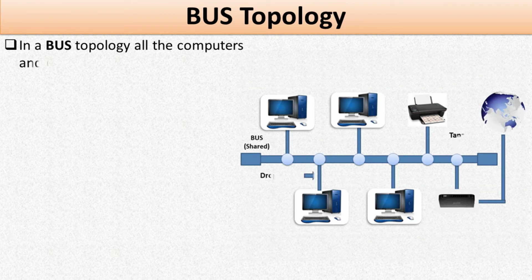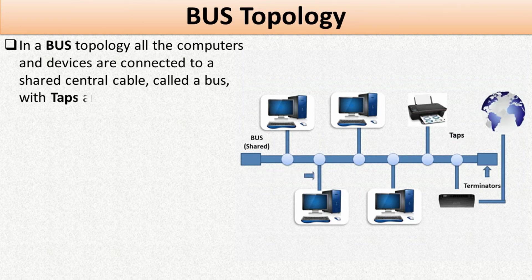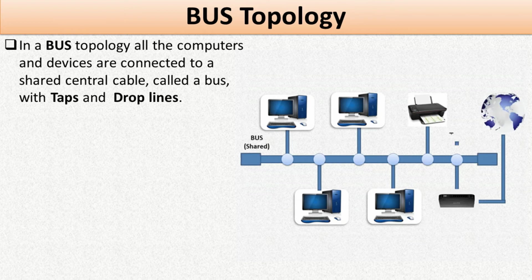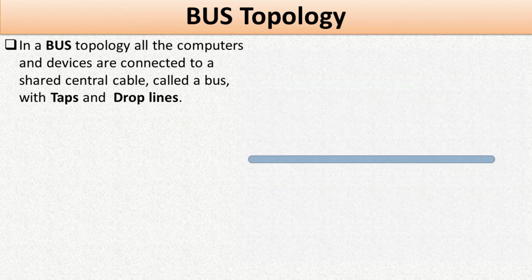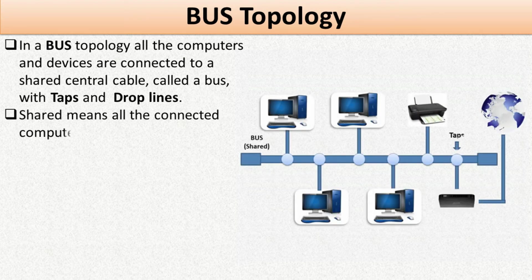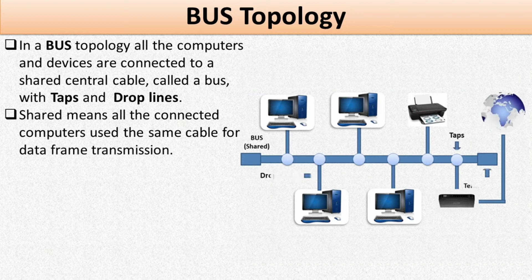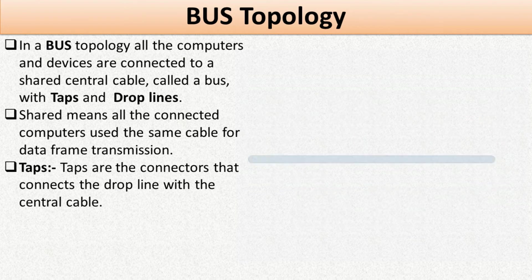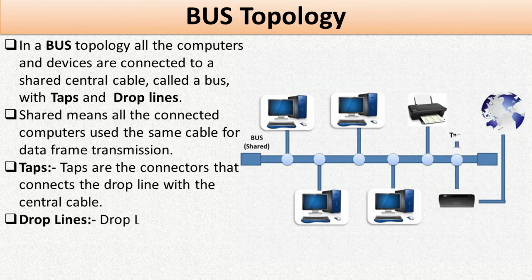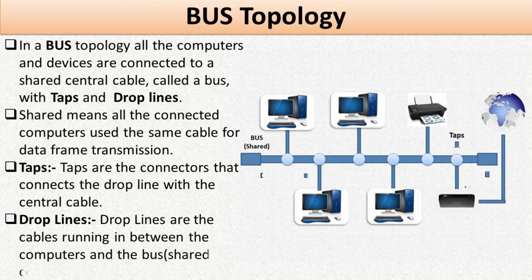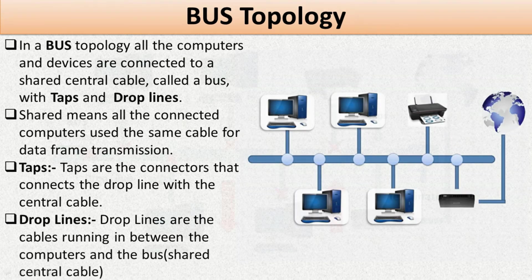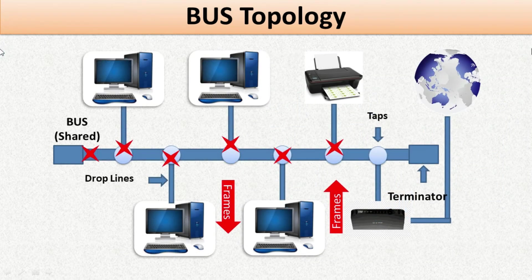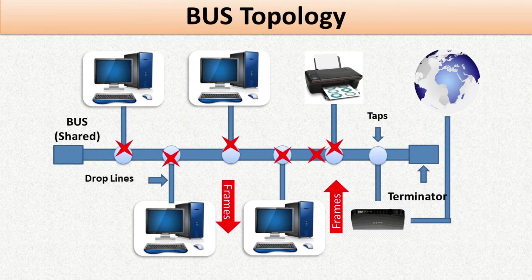Bus Topology: In a bus topology, all the computers and devices are connected to a shared central cable called the bus, with taps and drop lines. All connected computers use the same cable for data frame transmission. Taps are the connectors that connect the drop lines with the central cable. Drop lines are the cables running between the computer and the shared central cable.